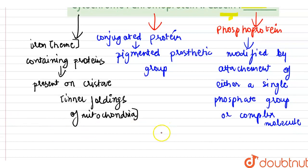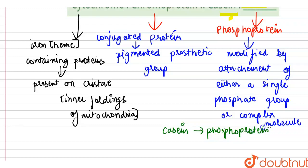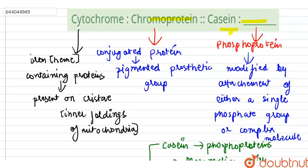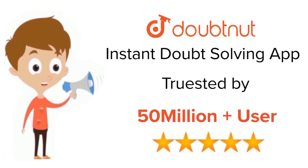These proteins are commonly found in mammalian milk. Casein protein contains phosphorus, and is classified among metalloproteins. So the answer for this question is phosphoprotein.